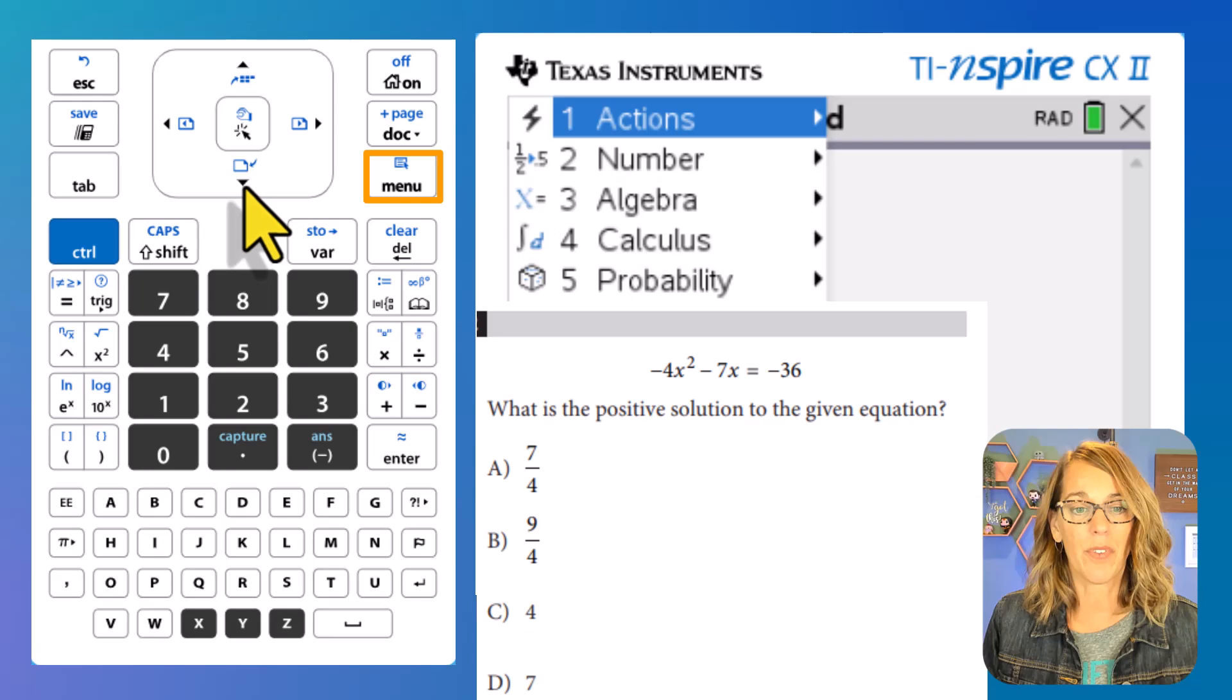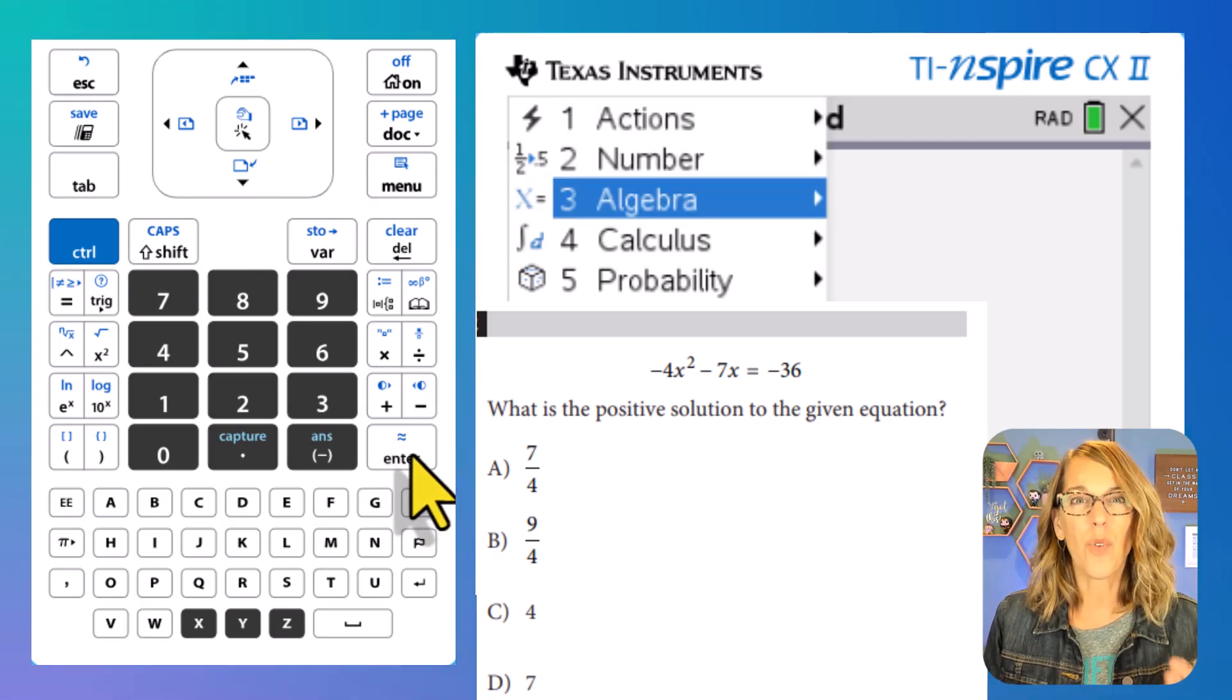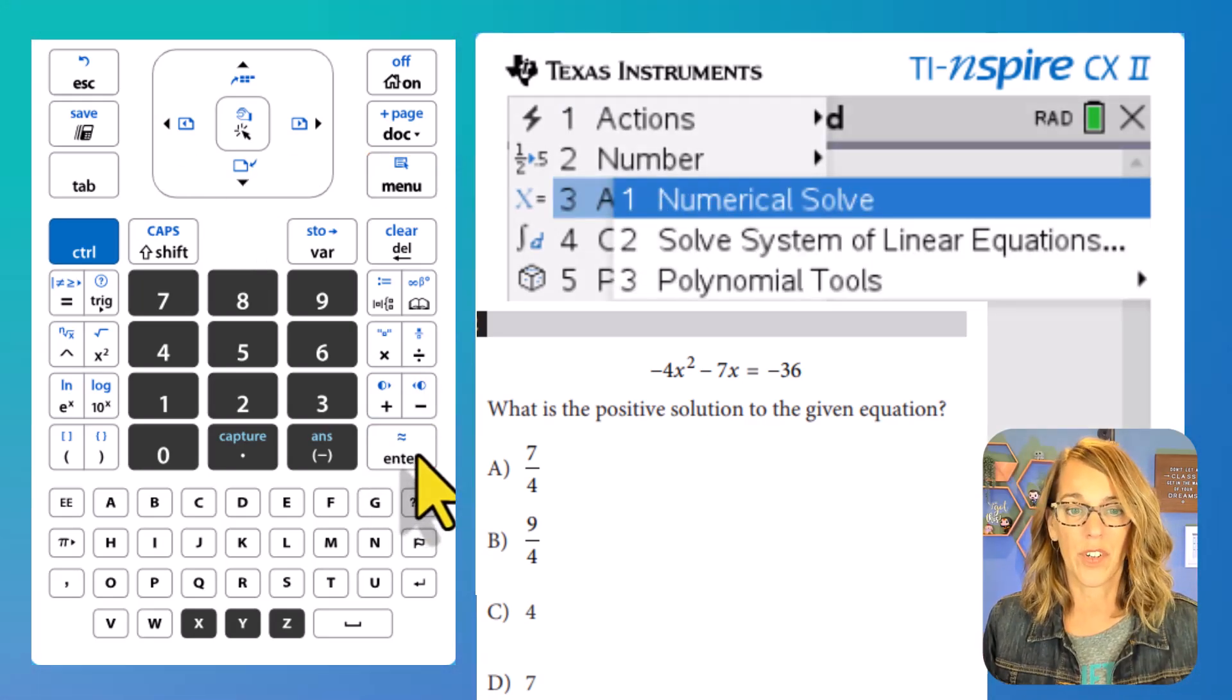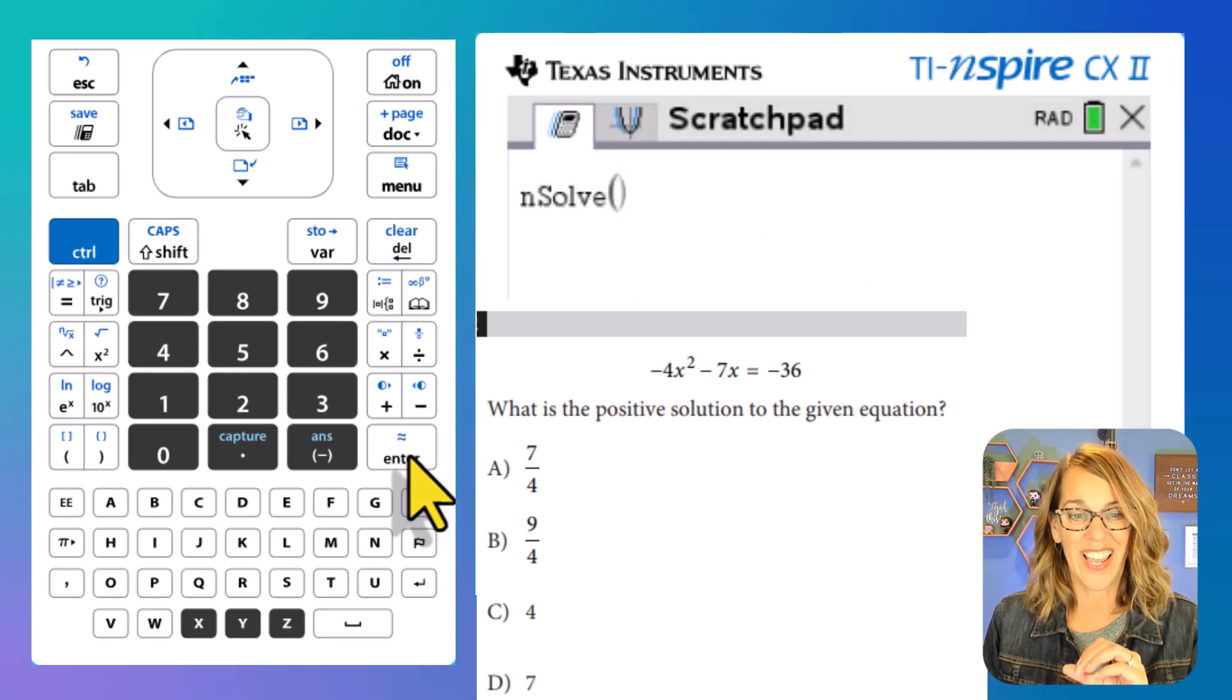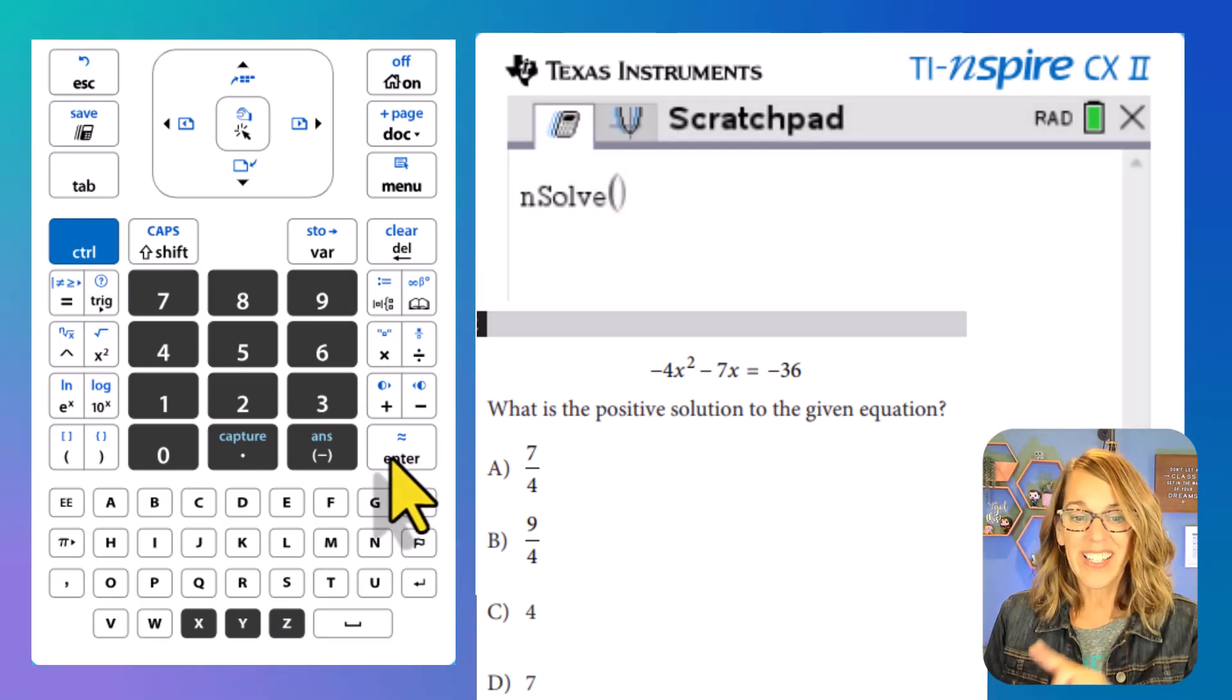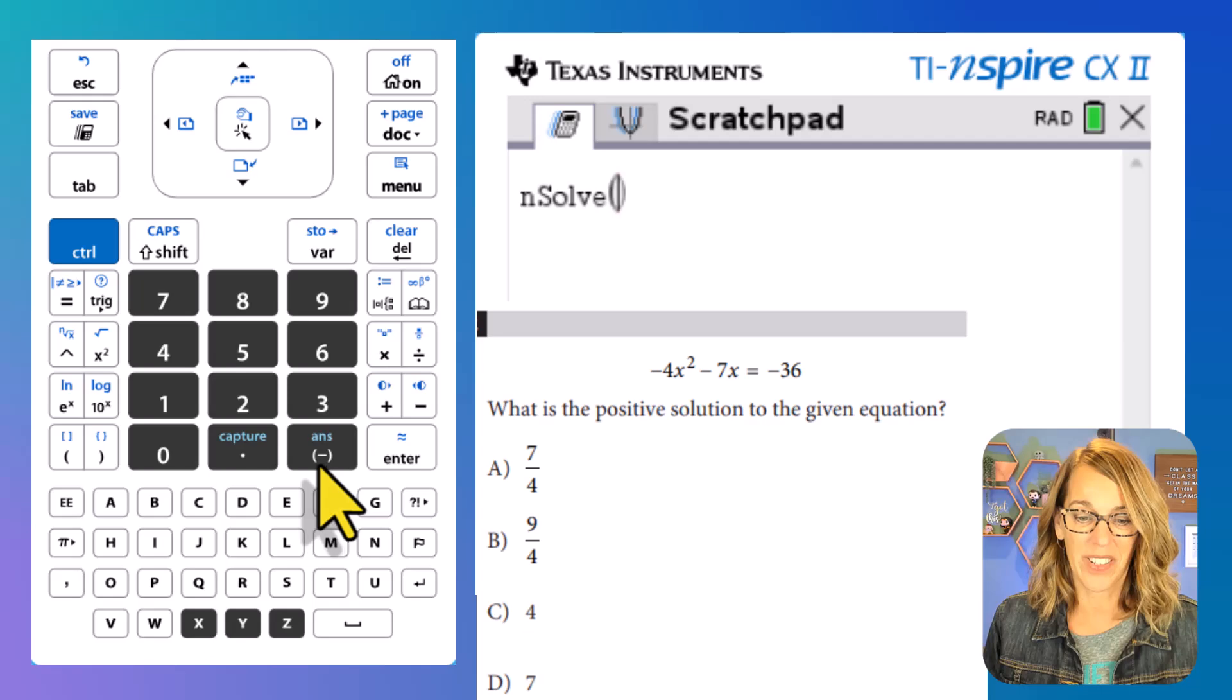I want to choose algebra, which is number three. You can arrow down and hit enter, or you can just type number three. So enter. And I want that numerical solve. Let's hit enter again.